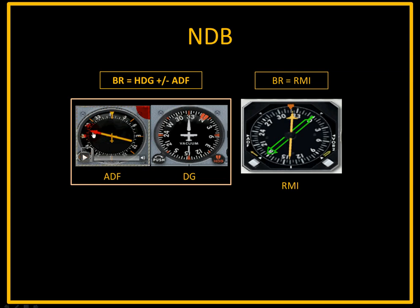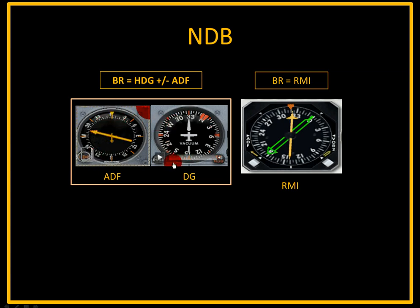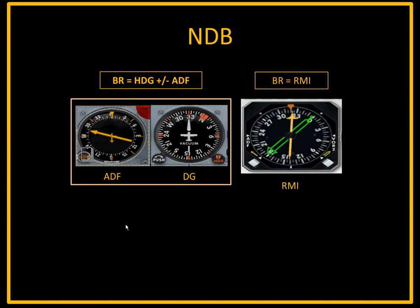In a sense, the rotating card ADF becomes the equivalent of an RMI, telling you exactly the heading to turn to fly to the station. But once you start turning, that's no longer the same value, because the card won't rotate as you turn. So you have to write it down and keep in mind your target heading. Once you turn to that heading, the needle should point more or less straight to the station, and you rotate the card again to match the DG value. Here in the video you can see a quick demonstration of me rotating the card. Notice as I rotate the card, the needle doesn't deviate — it always points towards the station. The card just gives you a relative index.